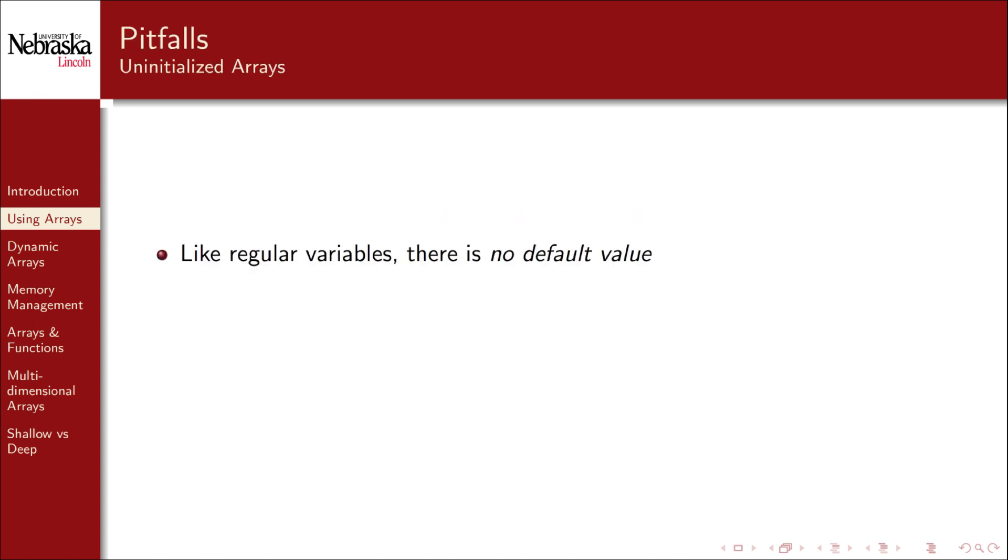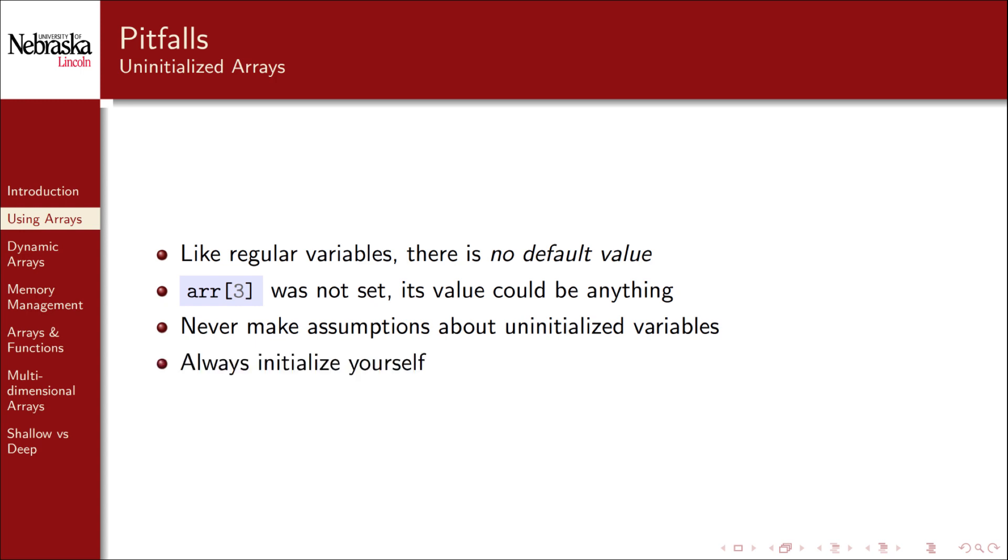There are several pitfalls to avoid when working with arrays. Just like regular variables, C does not specify a default value for values stored in an array. In our previous example we didn't set the fourth element, the element at index 3. Thus the value stored in there could be anything. Never make any assumptions about the value stored in uninitialized variables. Instead always initialize array values if you need them to have certain values.